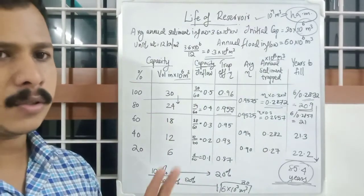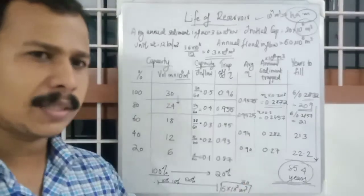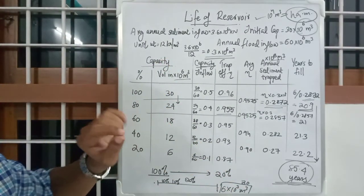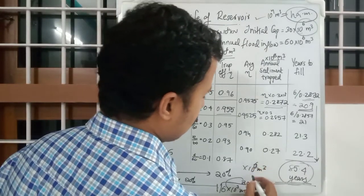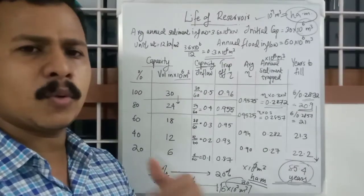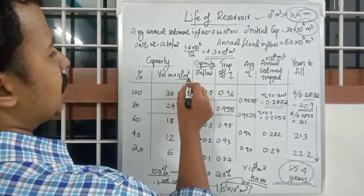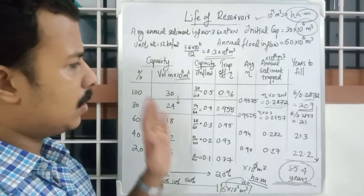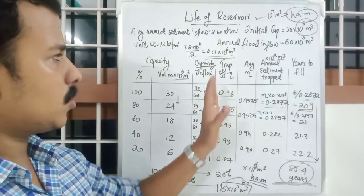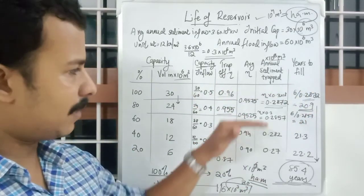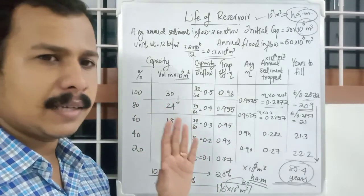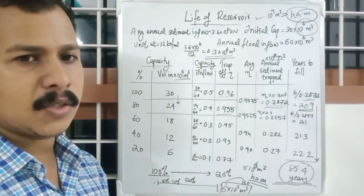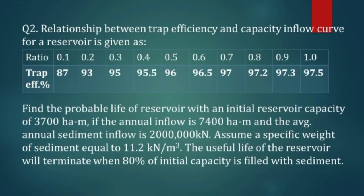One more point: sometimes problems give units in hectometers instead of million m³ — hectometer is also a volume unit used for large values, so just substitute that in place of million m³ and the procedure remains the same. Follow the rules: take trap efficiency, work one interval at a time, and sum all the years. This is one of the most important calculations in water resource engineering. Take note of units and values when solving other problems.